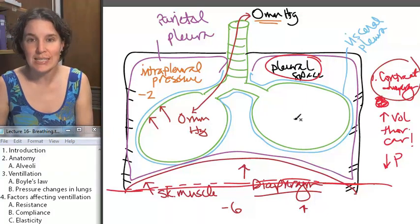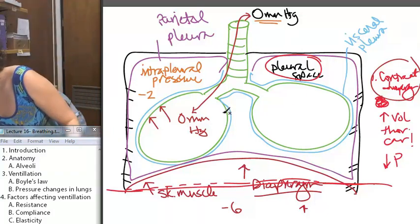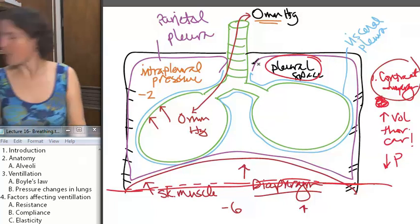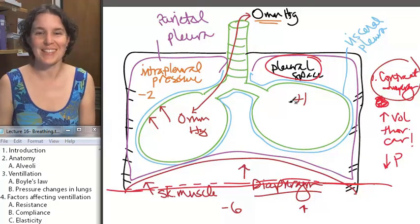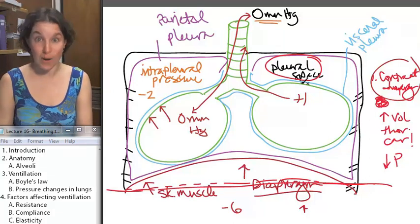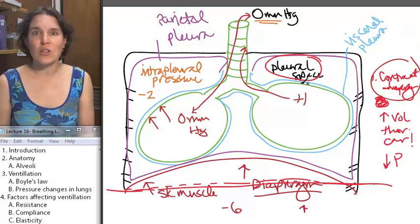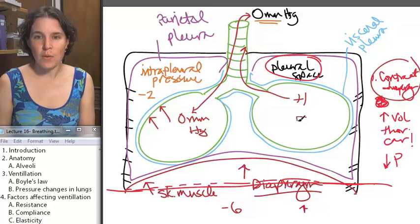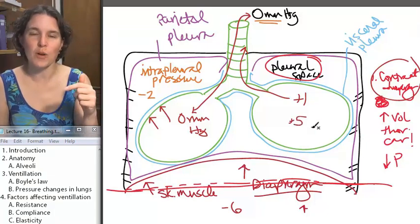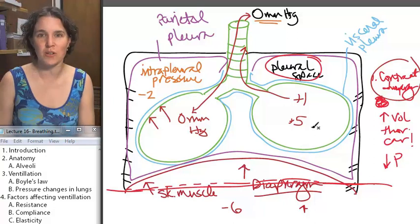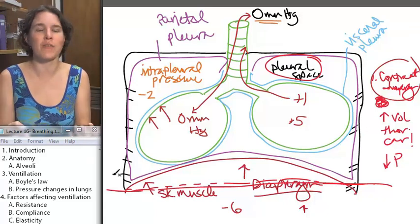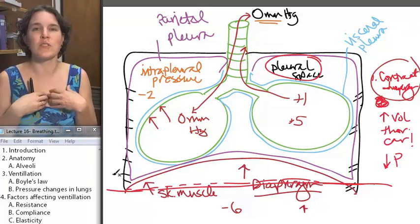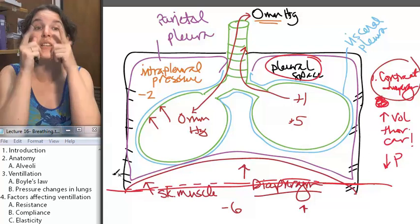In fact, the pressure inside when you contract, it actually in your alveolus goes up to like one. That's huge. Well, it's not that huge. But if my pressure is one, then the air is going to flow out. If I wanted to increase the pressure inside there anymore, I wanted to make it five, I'm going to have an alveolar pressure of five millimeters of mercury compared to the external environment. All that means is I just blow out air faster.